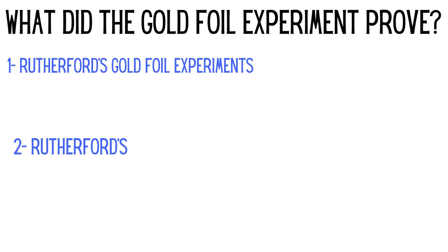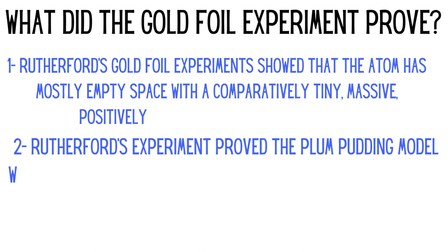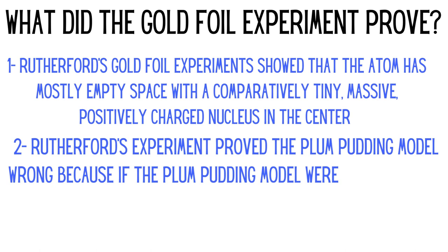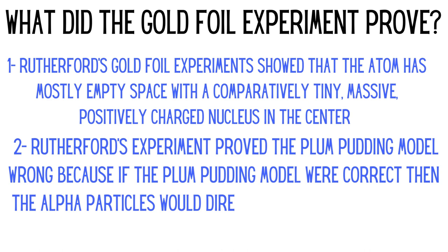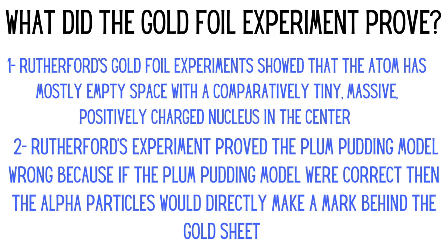What did the gold foil experiment prove? It proved that the atom has mostly empty space, with a comparatively tiny, massive, positively charged nucleus in the center. Rutherford's experiment also proved that the plum pudding model was wrong, because if the plum pudding model was correct, the alpha particles would directly make a mark behind the gold sheet.